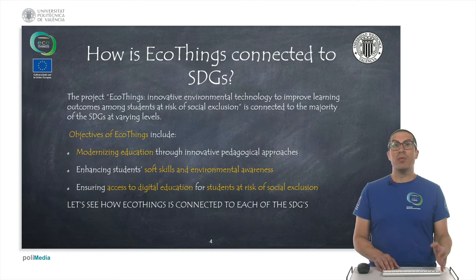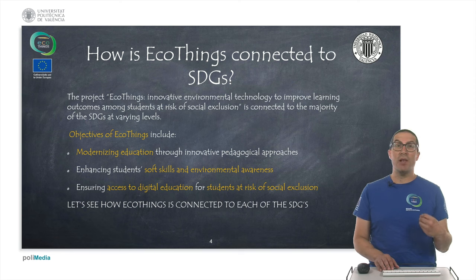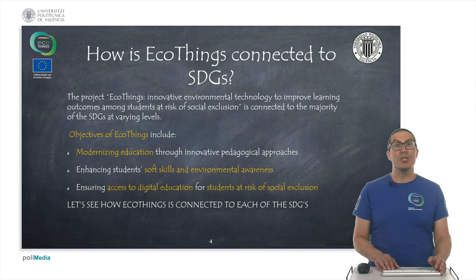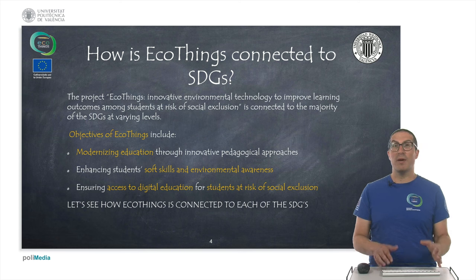So how is EcoThings connected to these Sustainable Development Goals? The objectives of EcoThings include modernizing education through innovative pedagogical approaches, enhancing students to develop soft skills and environmental awareness, and ensuring that digital education is accessible for all students, particularly for students at risk of social exclusion because of the kind of activities developed within the project.